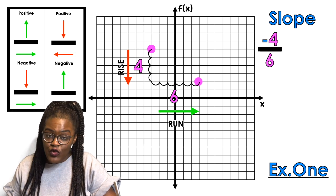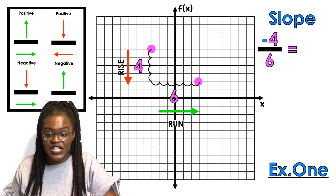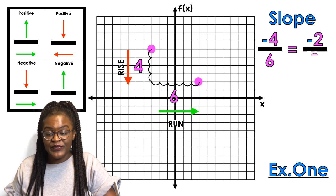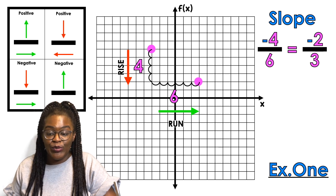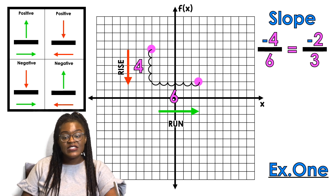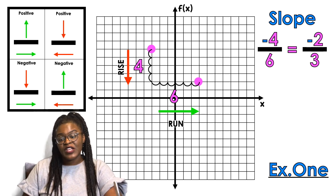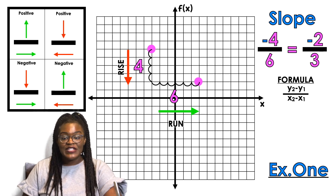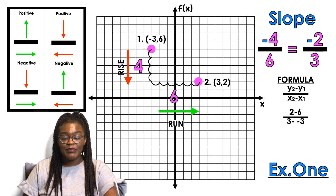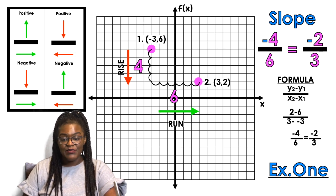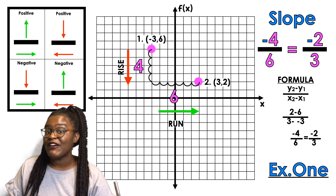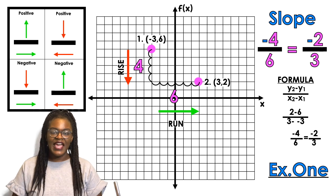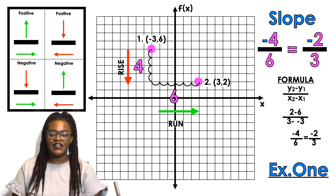My slope is negative four over six, but when you have fractions you always want to simplify. I can simplify both by two and get negative two thirds as my slope. The rise of four was negative, so I made sure to put a negative on it. I can double check using the formula: point one is negative 3 comma 6, point two is 3 comma 2. Plugging in: y2 minus y1 is 2 minus 6, over x2 minus x1 is 3 minus negative 3, and I still get negative four over six, which equals negative two thirds.